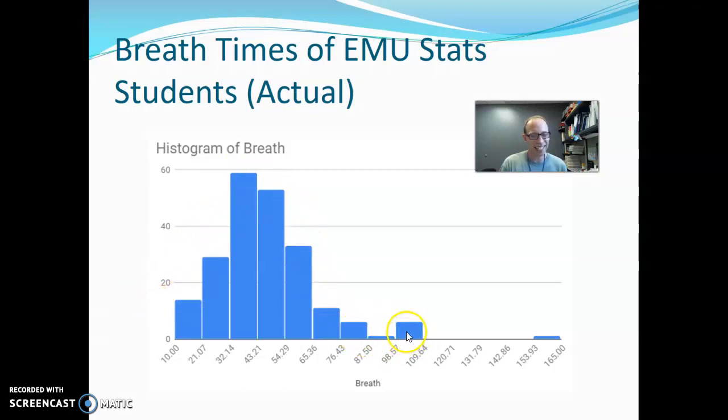Aside from that one outlier, you really do see a normal distribution here, maybe a tiny little right skew. But I would say that's pretty normally distributed there. That bell-shaped curve is really coming through.